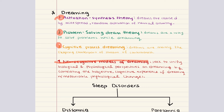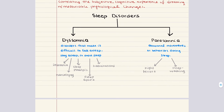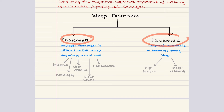Sleep disorders are divided into two categories: dyssomnia and parasomnia. Dysomnias refer to disorders that make it difficult to fall asleep, stay asleep, or avoid sleep. They include insomnia — difficulty falling or staying asleep, one of the most common sleep disorders, possibly related to anxiety, depression, medication, or disruption of circadian rhythms.